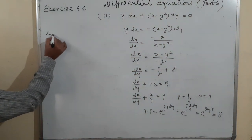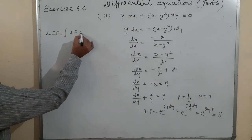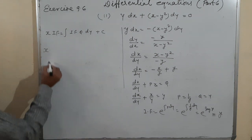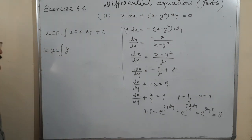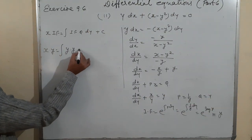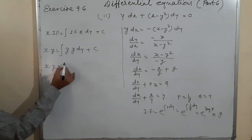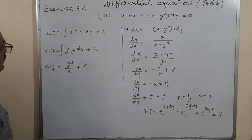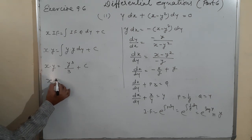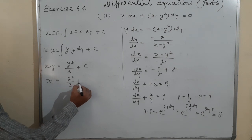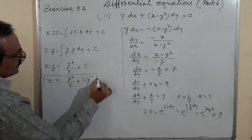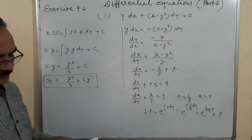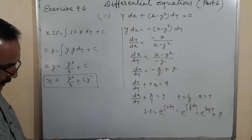Applying the formula: x·y = ∫y·y dy = ∫y² dy = y³/3 + C. Dividing by y: x = y²/3 + C/y, which can also be written as x = y²/3 + Cy^(-1). This is the value of x.